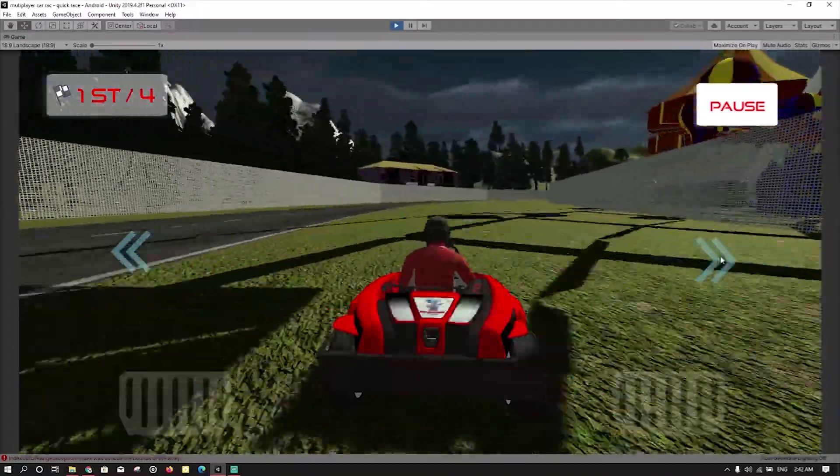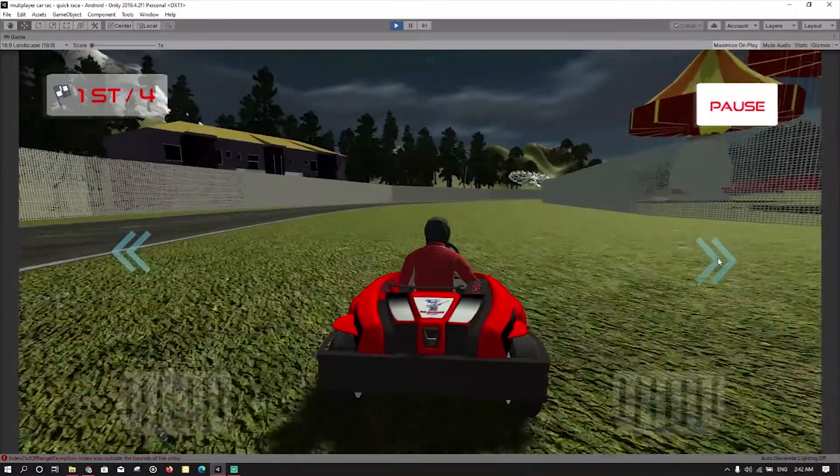First to achieve our goal, we have to apply waypoints. We need to have waypoints placed around the track.